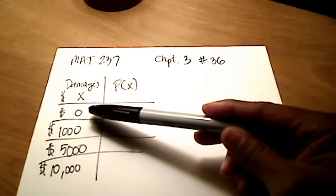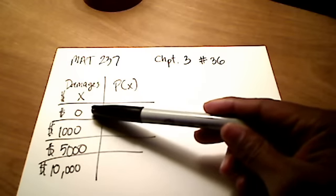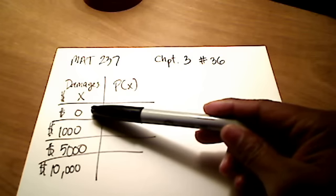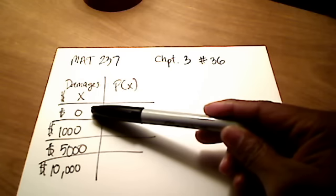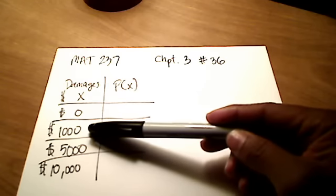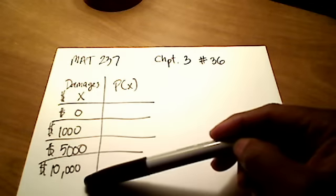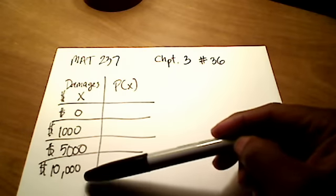So we could have an accident where there is $0 worth of damage. So maybe two cars barely touched each other, a car bumped into a wall or something, and there really was no damage at all. Or $1,000 worth of damage in an accident, or $5,000, or even up to $10,000 worth of damages.